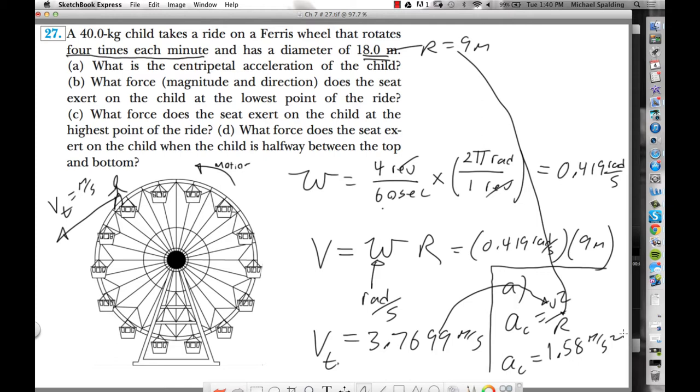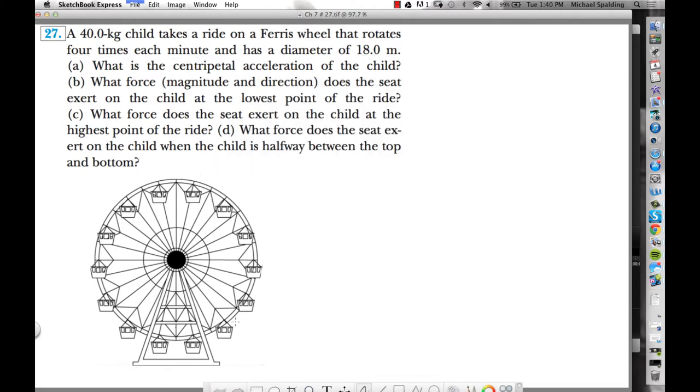Part B. What force does the seat exert on the child at the lowest point of the ride? So we're focusing on the kid. Here's the circular path right here. And the kid - here's a seat. The kid is sitting on the seat. What are the forces on the kid? Well, mg down, normal force up. The normal force is what they're asking for. When it says what force does the seat exert on the kid, what are they asking for? Normal force. The force of a surface is called the normal force. They are asking us for the normal force.